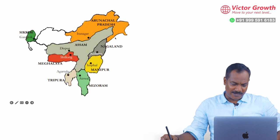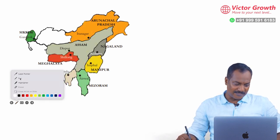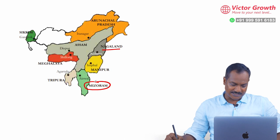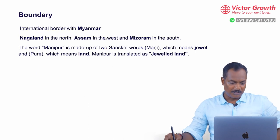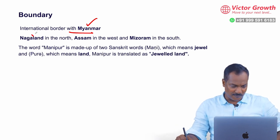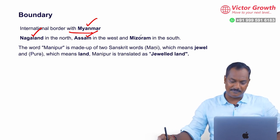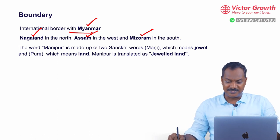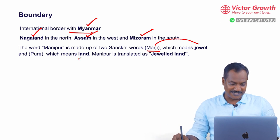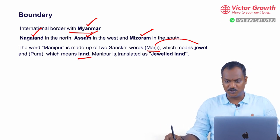This is a map of Manipur in the northeast. Manipur is surrounded by Nagaland on the northern side and Mizoram on the southern side. In the western side you have Assam. It also has an international border with Myanmar, which is very crucial. The word Manipur comes from two terms: 'mani' meaning jewel and 'pur' meaning land, so Manipur translates to 'jewel land'.